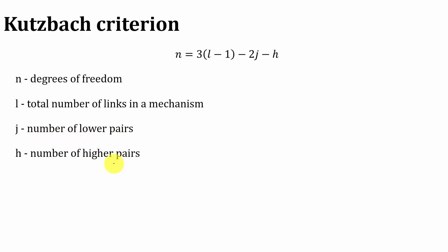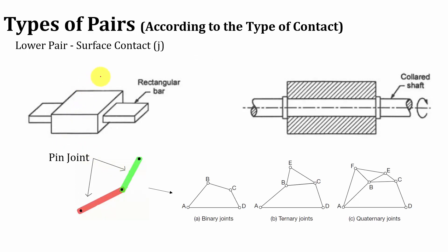If you don't have an idea about lower pairs and higher pairs, I will give you a small introduction. According to the type of contact, we can classify mechanisms into two: lower pair and higher pair. Whenever there is a surface contact between two linkages, it is called a lower pair. For example, in a rectangular bar, there is surface contact between two linkages. Similarly, when a shaft is inserted inside a hole, the surface contact between the hole and shaft surface makes it a lower pair.